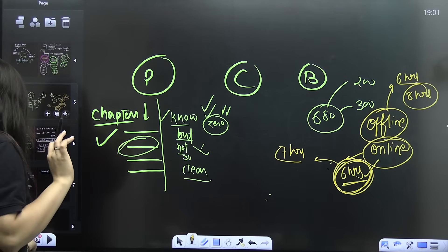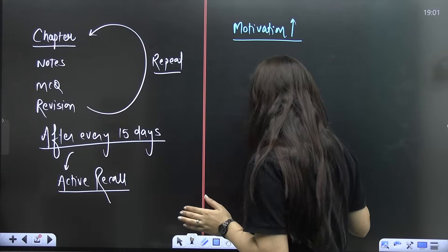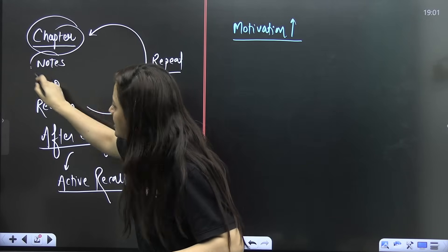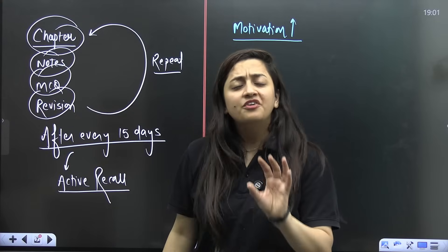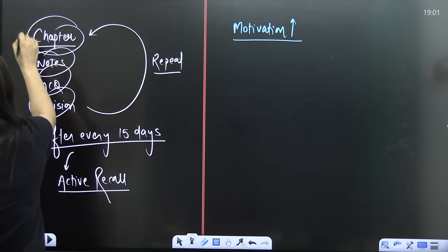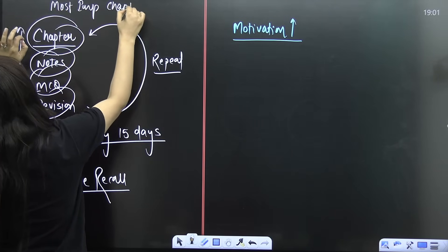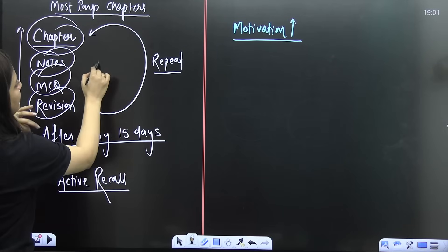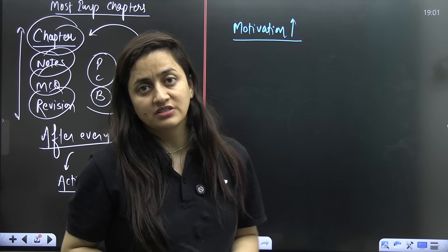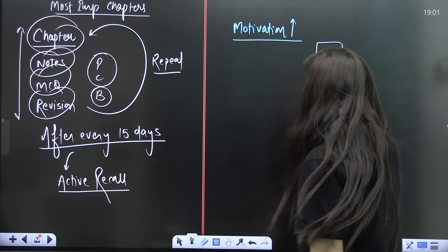For your ideal approach in self-study, you can follow our YouTube channel or wherever you feel comfortable. Start reading your chapter, make your notes, start MCQ practice, and revise. You have to follow this properly and sincerely for your most important chapters — especially for physics and chemistry. For biology, you have to follow this for every chapter, because we need to score at least 350 marks in biology.